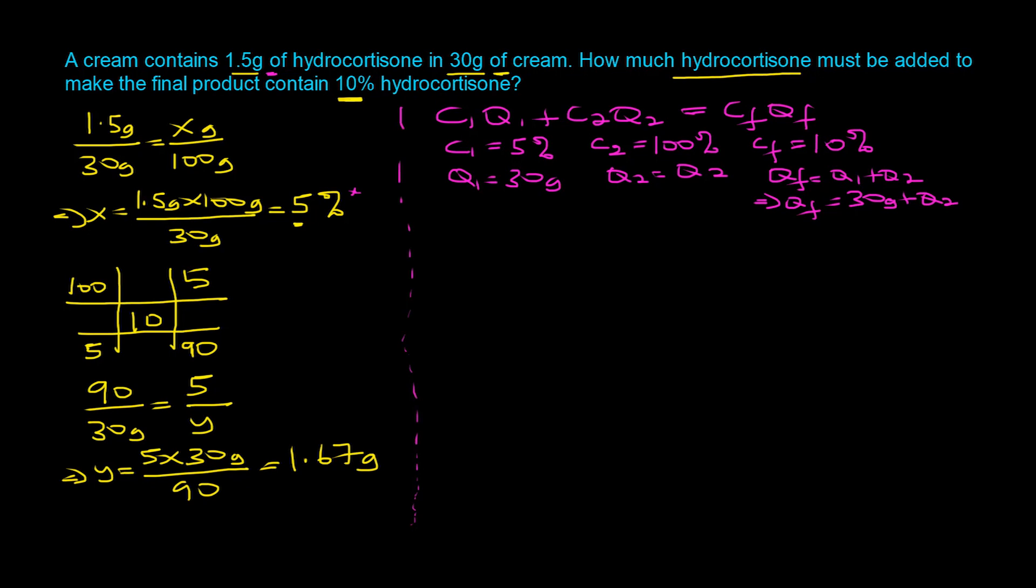Now we can put all this information in the original equation. C1 is 5, so we have 5 times 30 grams plus 100 times Q2 equals 10 times 30 grams plus Q2. We can simplify the equation. 5 times 30 grams gives us 150 grams plus 100Q2. We can distribute the 10 over 30 plus Q2.